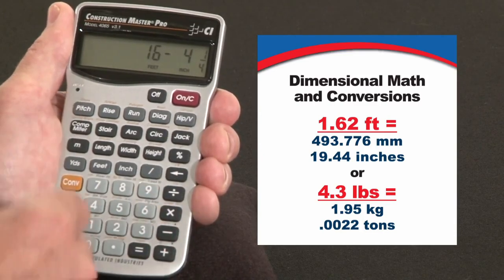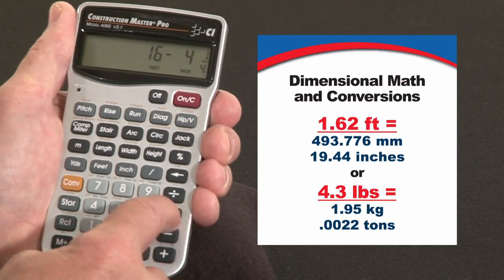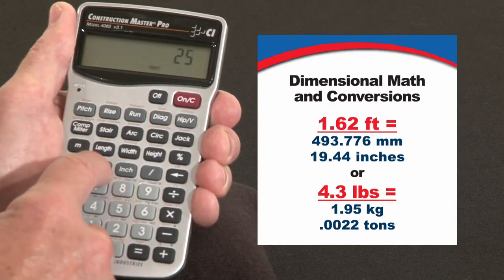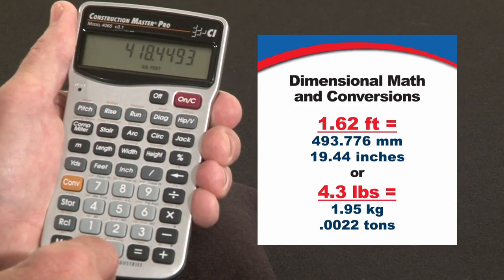Or multiply. Say that's one side of a pad we want to pour. By 25 feet 7 inches. There's our square footage.